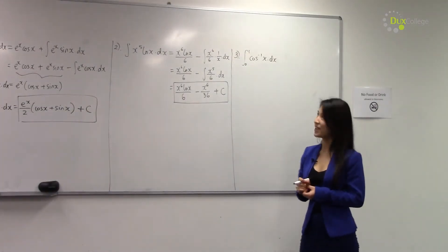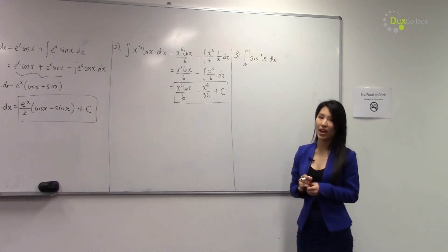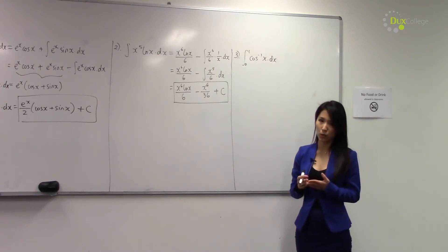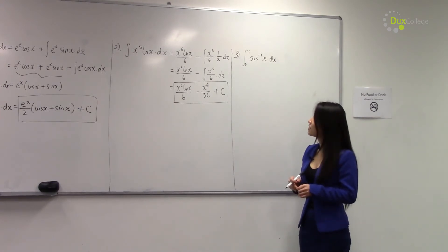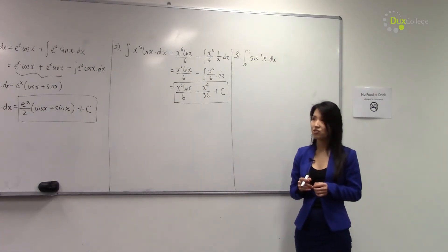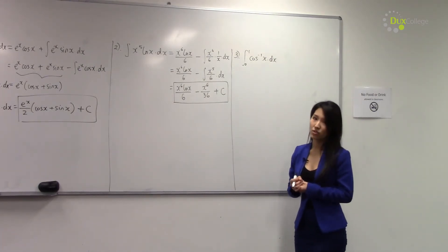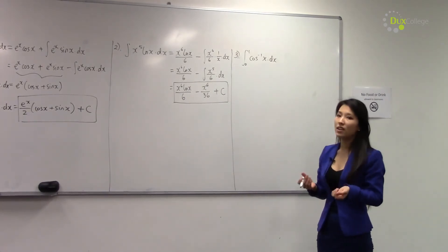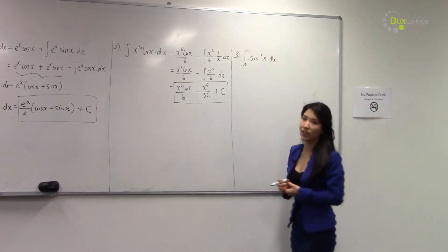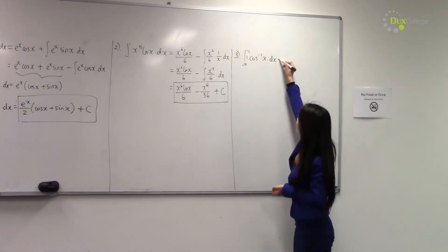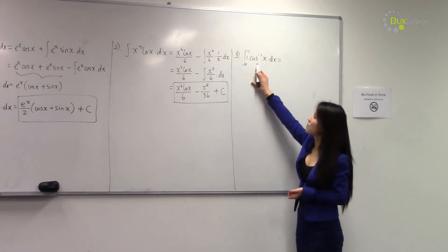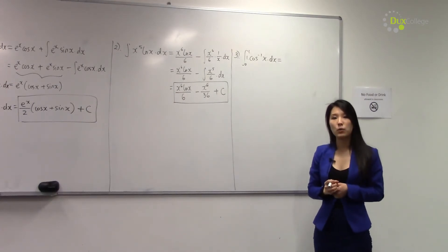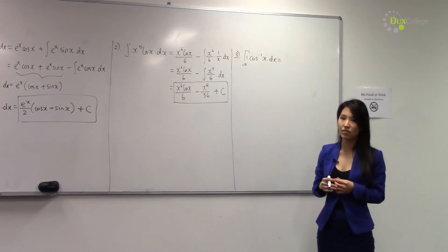Now let's go through question number three. In this case, we have a definite integral and we have to evaluate the integral of arccos(x) from zero to one. This is not exactly a product of two functions — we only have arccos(x). So what we can do is use one times arccos(x), giving us the product of an algebraic function with an inverse cos function. Following LIATE, we prefer to integrate algebraic rather than inverse cos.